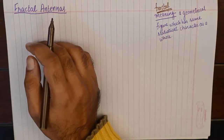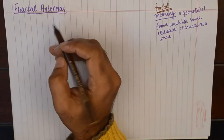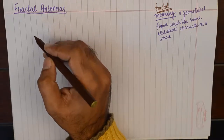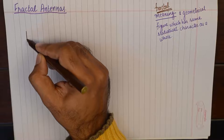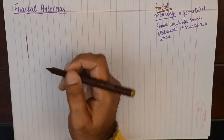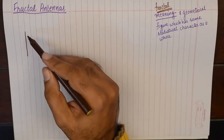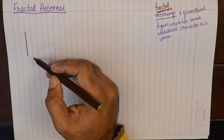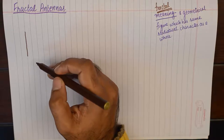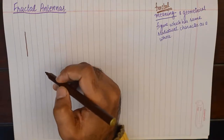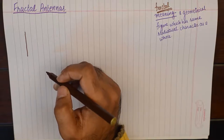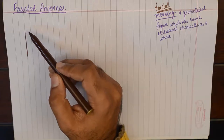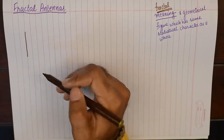I will take up an example of a fractal antenna and show you how these antennas enhance performance. For example, if we are working on a λ/2 dipole antenna whose geometry will be a simple straight line, one way to enhance the performance is to increase the length of the antenna without changing the space being occupied by it.